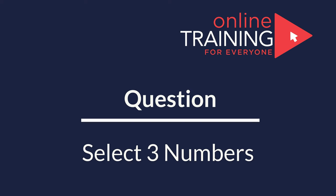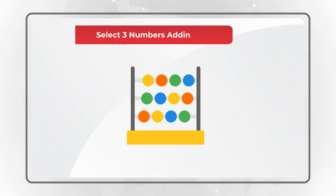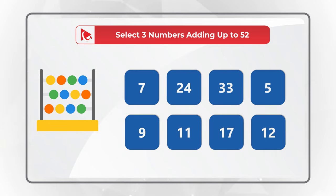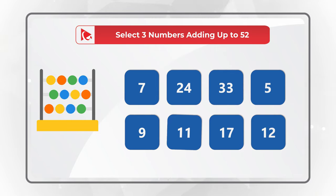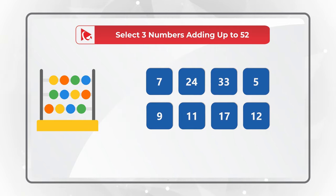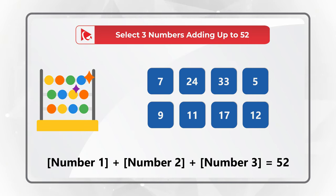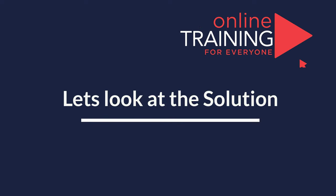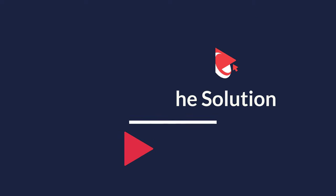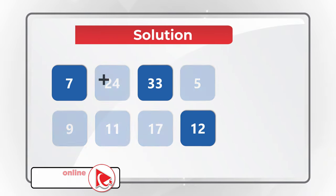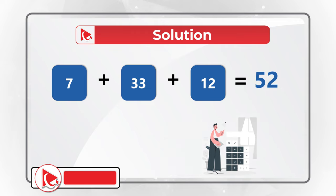Here is an unusual question we're starting to see on the test more often. You need to select three numbers which add up to 52. There are eight choices to select from: 7, 24, 33, 5, 9, 11, 17, and 12. Give yourself 10 to 15 seconds. The correct numbers are 7, 33, and 12 — because 7 plus 33 plus 12 equals 52.